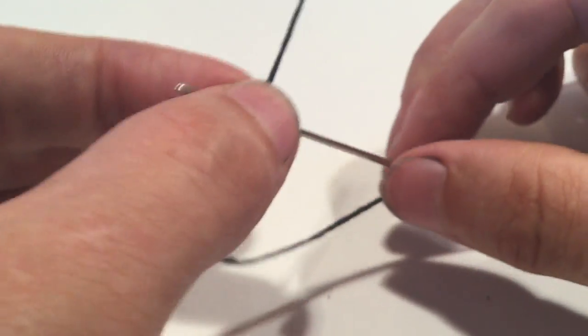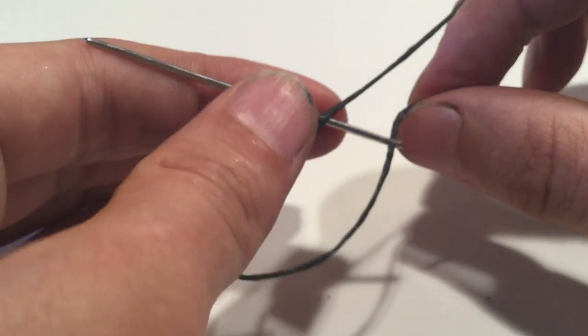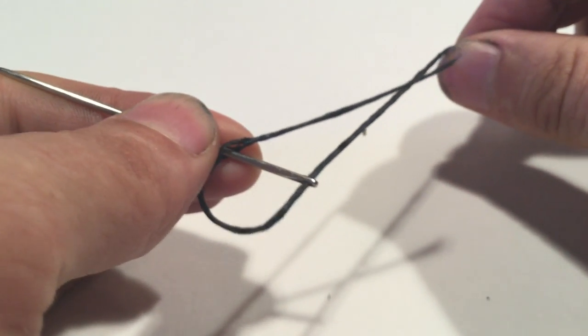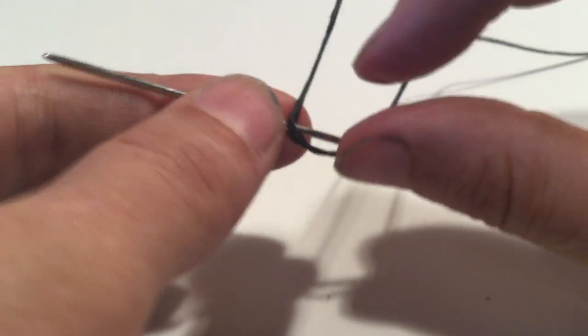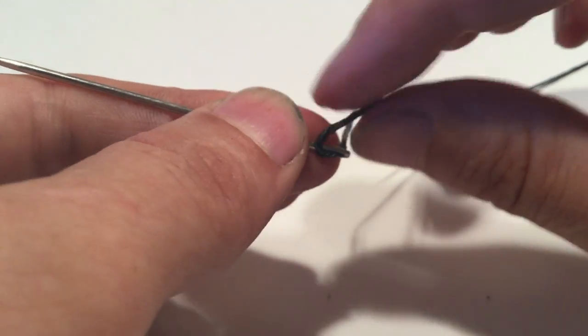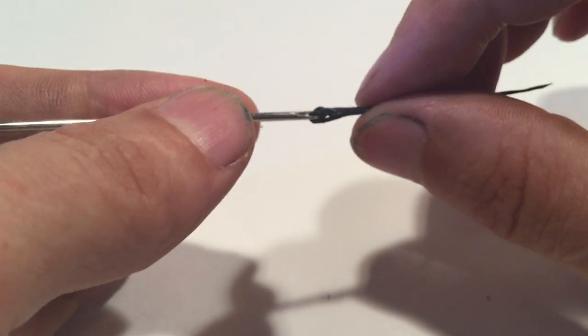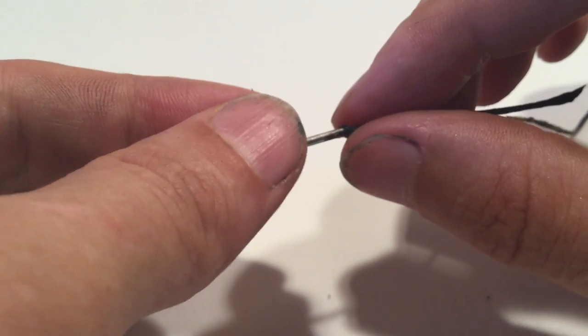And then here's the tricky part. You're going to push it all the way down to the base, and then you're going to pull this thread back through the eye, scooch it down, pull it through, scooch it down, pull it through, until it's one continuous knot.